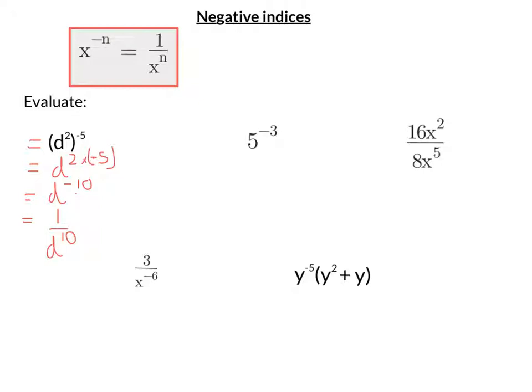So next one, we've got 5 to the negative 3. Well, using that rule, I can change that to 1 over 5 cubed. Now I know what 5 cubed is, so that's 125. So 5 to the negative 3 is the same as 1 over 125.